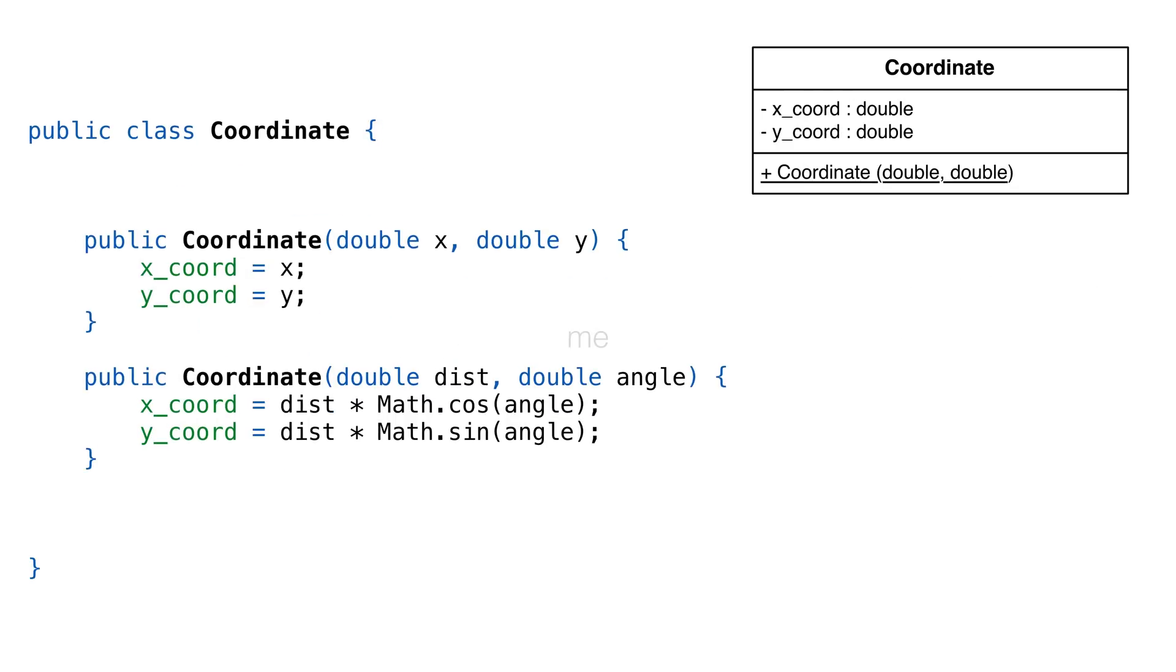So back to our earlier problem, let's look at creating our coordinate class. We could use a builder pattern here, but we've only got two parameters. It's either x, y, or distance and angle.